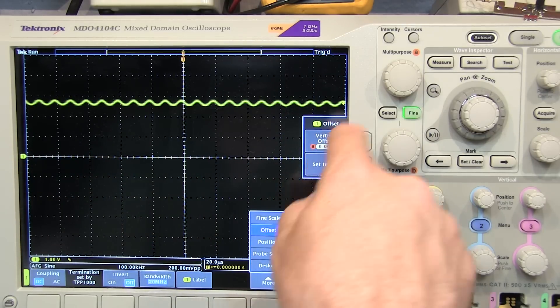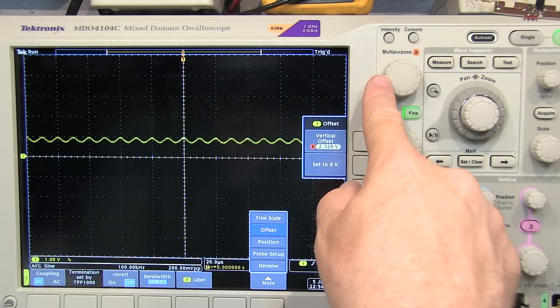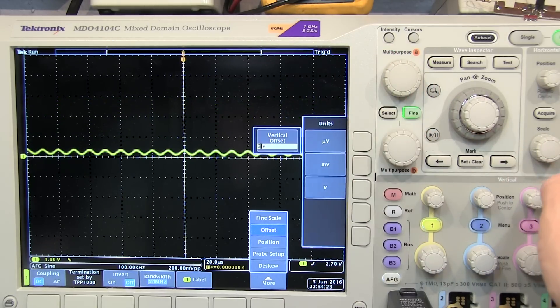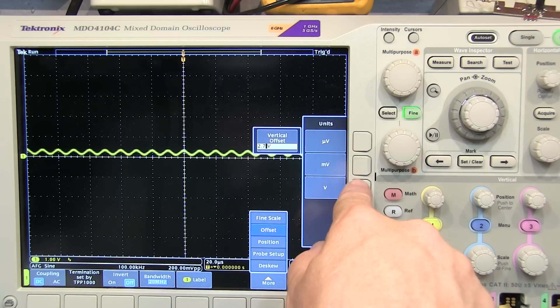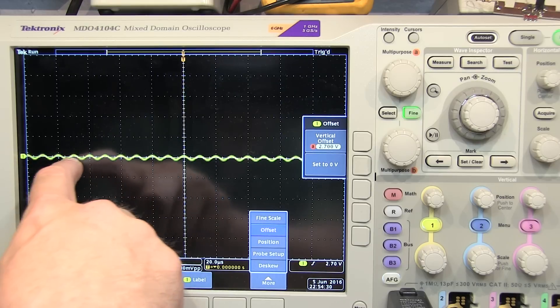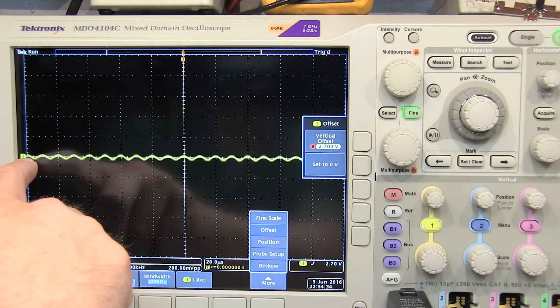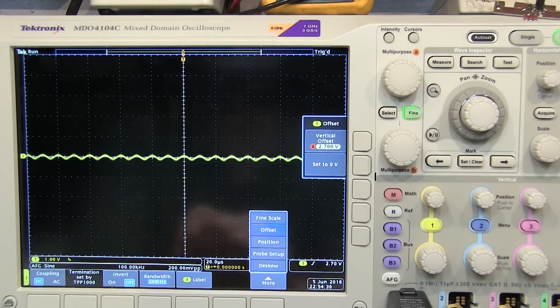But if I change that vertical offset to some other value, I can move that waveform up or down. Now in my case, I know I want it to be exactly 2.7 volts, so I'll just dial that in, and notice how now the reference point is sitting right in the middle of my waveform, because that reference point now, instead of representing ground, is representing 2.7 volts.